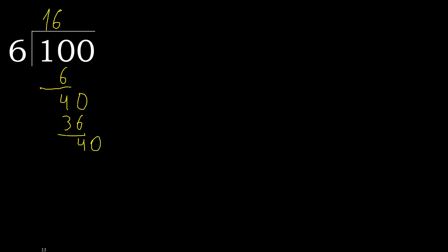Therefore complete. Always complete with 0, here with point, complete. 40. 6 multiplied by 7 is greater, multiplied by 6 is 36. Subtract, complete here.